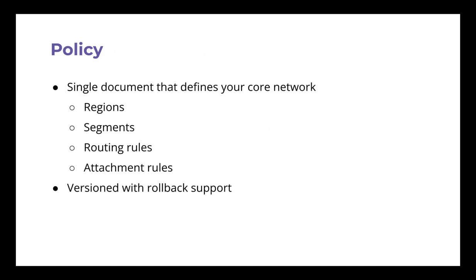Then there is the policy, which is a single JSON document — and they have a really nice UI for it — describing what regions you want to be in. Right now all regions are supported; when we started there were only eight. You'll define your segments there, but be aware: the hard limit is 20 segments, so don't over-segment. That applies to the whole core network. Then you have routing rules defining what talks to what. For those who know it, it's IP VPN over MPLS.